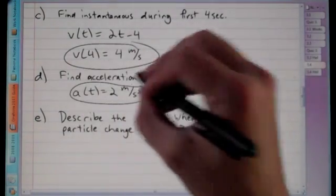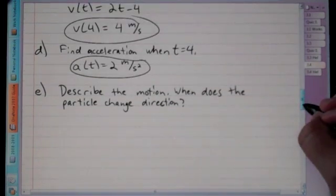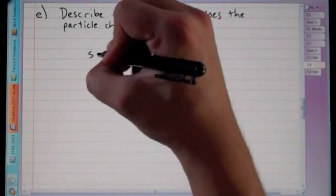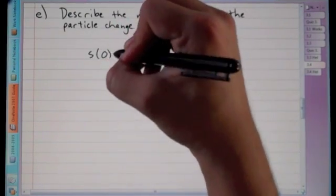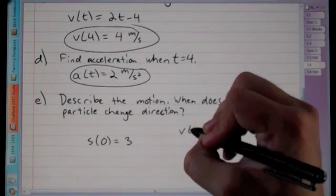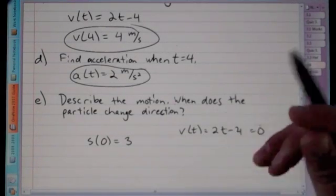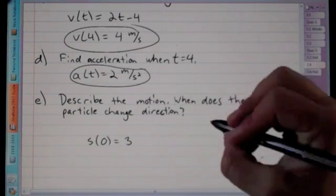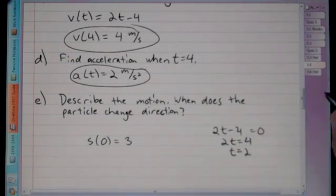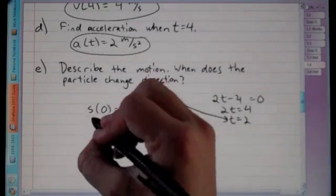To describe the particle's motion and find when it changes direction, we note the starting position at t = 0 is s(0) = 3. The particle changes direction when velocity equals zero: 2t − 4 = 0, so t = 2 seconds.